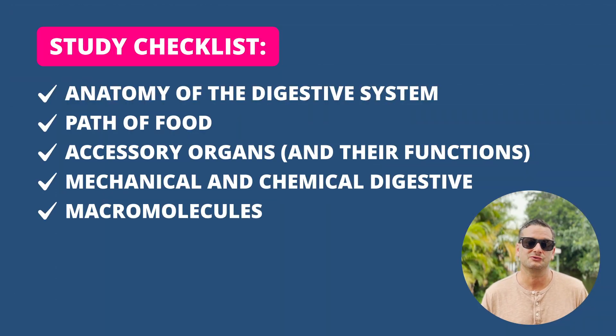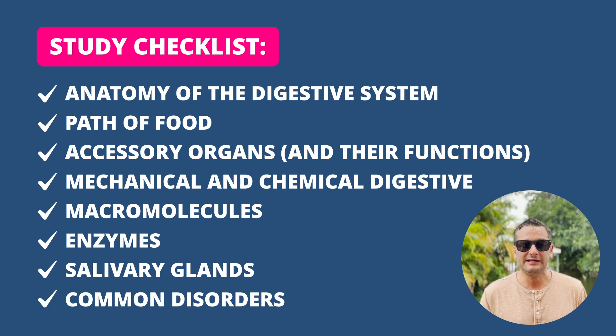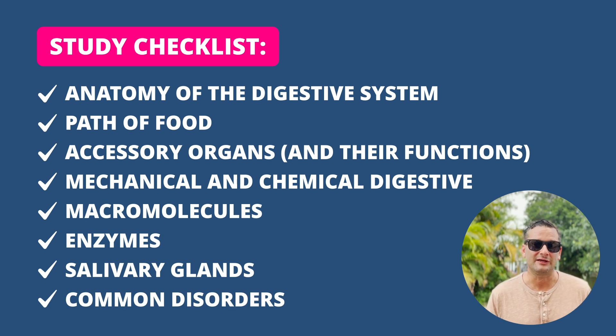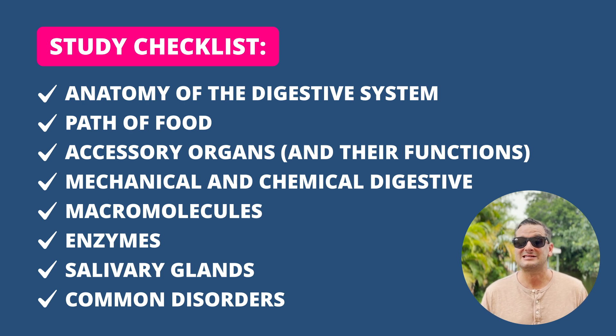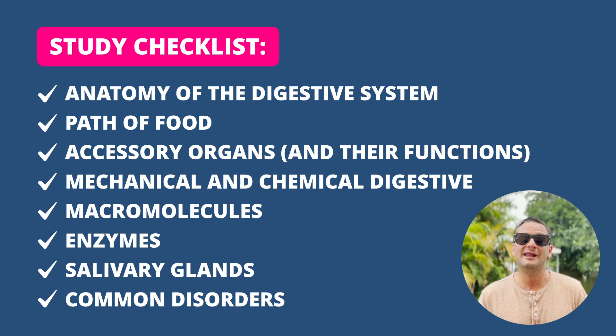Here is what you will be expected to know about the gastrointestinal system: the digestive system and what it consists of, including the digestive tract; what the accessory organs are and how they contribute to digestion; where food does and does not pass through the digestive system; and the differences between mechanical and chemical digestion.